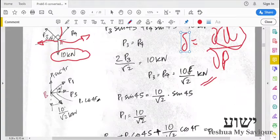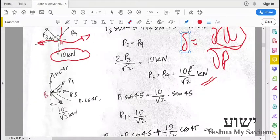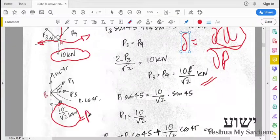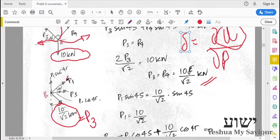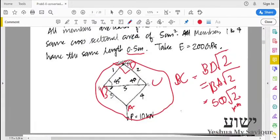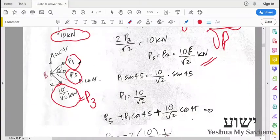Next, we go to point B. At point B we have 10/√2, which is equal to P3. P1 is unknown, P5 is unknown. Actually, P1 could be found out very easily by considering the entire structure. We can consider point D and analyze that. We can do the same type of analysis that we did at point A.